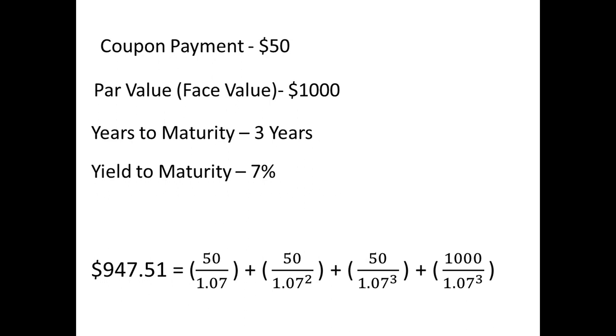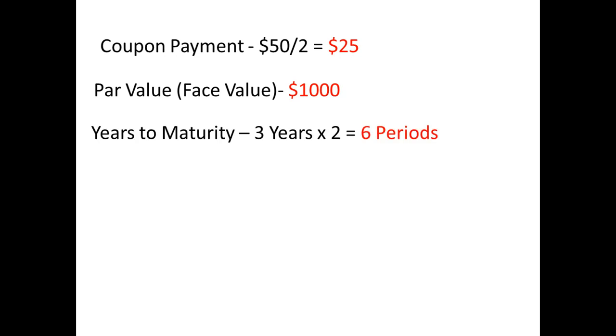If this bond made semi-annual payments, then we would multiply the number of years to maturity by 2, so there would be 6 periods. We would also divide the yield to maturity and the coupon payments by 2, so the yield to maturity would be 3.5% and the coupon payments would be $25.